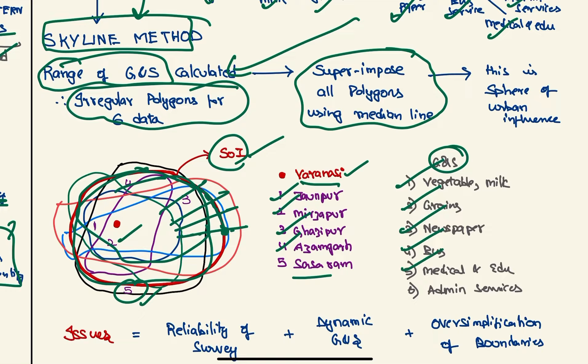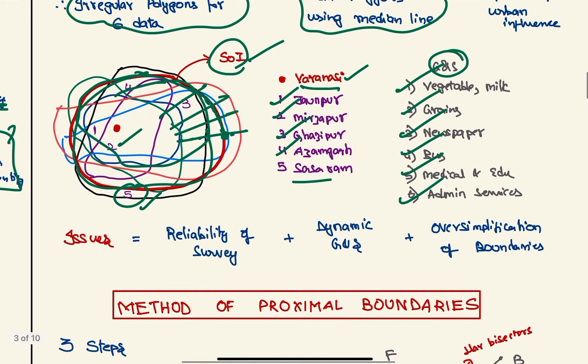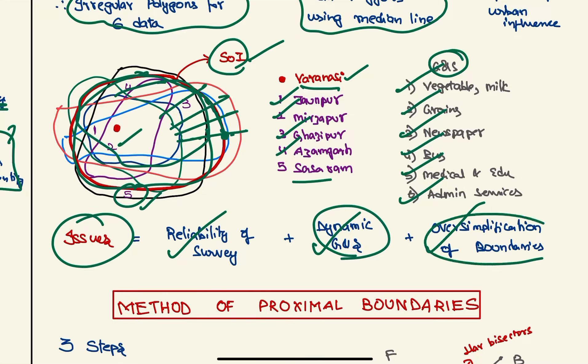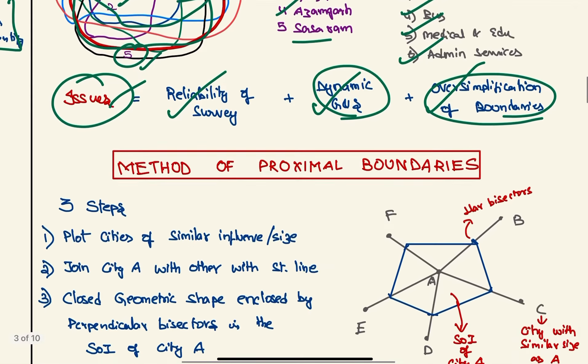Goods and services he considers consist of vegetables and milk, grains, newspaper, bus service, medical, education services, and administrative services. What are the issues with this method? Reliability of the survey, dynamic nature of goods and services, and oversimplification of the boundaries.